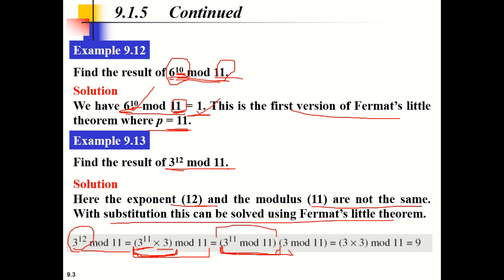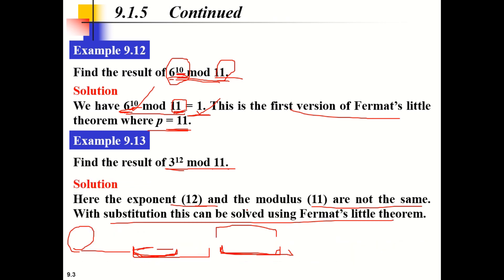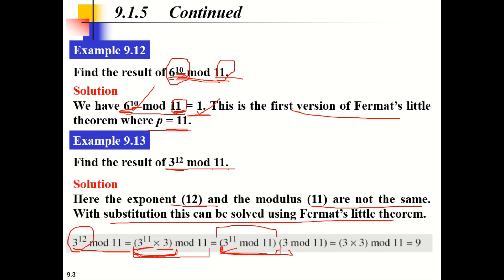The second version, A raised to P congruent to A mod P, holds here because P and the power are the same. So 3 raised to 11 mod 11 gives 3 mod 11, which equals 3. The result will be 3 into 3, which gives 9, and 9 mod 11 gives value 9. This Fermat theorem makes it easy to calculate such large exponential powers.